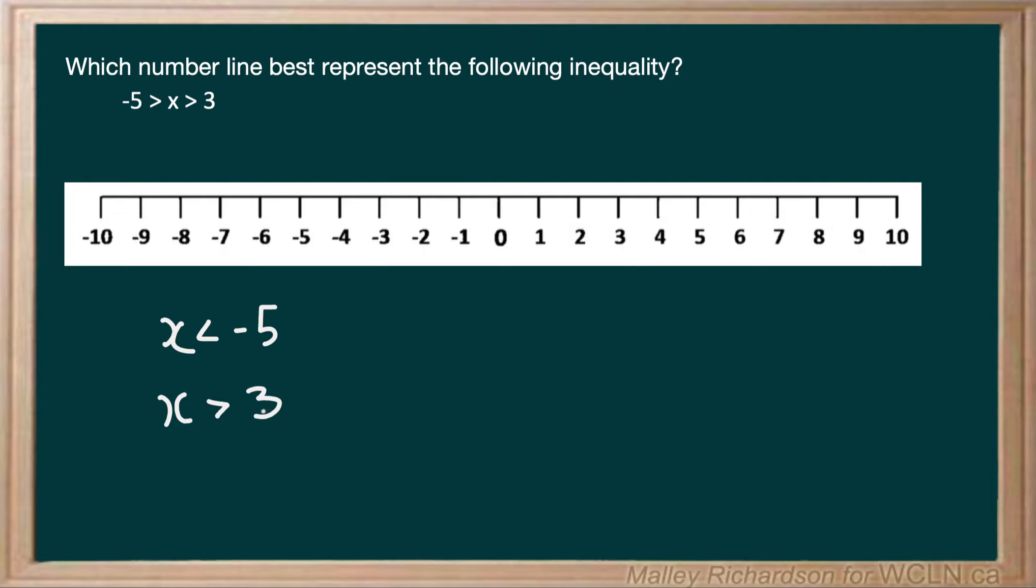If we were to draw these two new inequalities on a number line, we would draw two circles at our n values. So our n values are negative 5 and positive 3. Both circles are open because negative 5 and positive 3 are not included in the inequality.